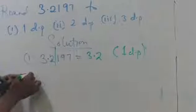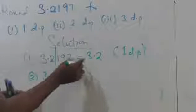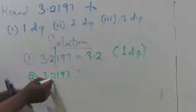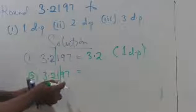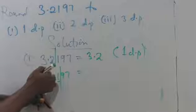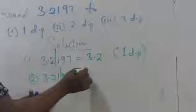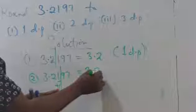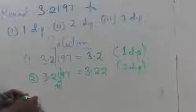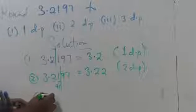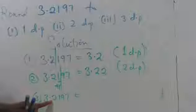For the second part, rounding 3.2197 to 2dp: the first dp is 2, the second dp is 1, so we're stopping at 1. We consider the next digit, which is 9. Since 9 is greater than or equal to 5, we round up — which means we are going to add 1 to this digit.